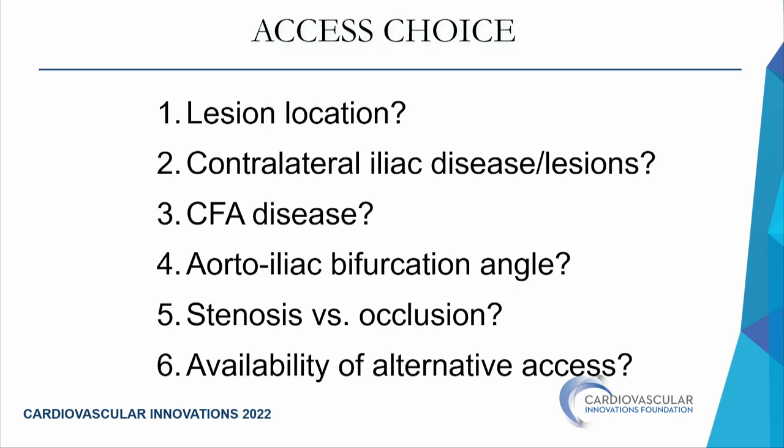Six key questions determine access site choice for aortoiliac interventions: (1) What is the lesion location — osteal aortoiliac or closer to the common femoral? (2) Is there contralateral iliac disease — how diffuse, is it occluded? (3) Is there common femoral disease, unilateral or bilateral, necessitating alternative access? (4) What is the bifurcation angle — is going up and over too difficult, suggesting brachial or radial? (5) Is it stenosis or occlusion — occlusions typically need dual access? (6) Availability of alternative brachial/radial access?